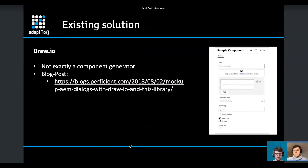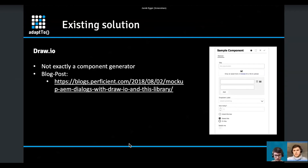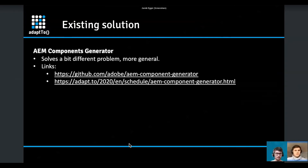We found a nice extension for draw.io written by the Peregrine guys for mocking authoring dialogues, but unfortunately we cannot export that information or reuse it. We also looked at the AEM Components Generator covered at this conference, but it's still kind of hard to work with the JSON, even if it simplifies the structure for creating component definitions.